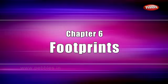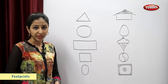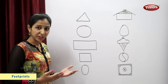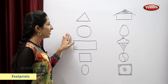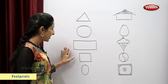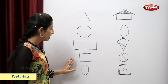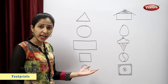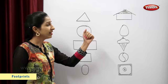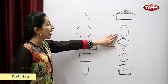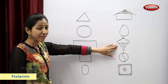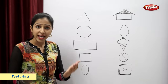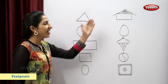Chapter 6 Footprints. Students, on one side I have drawn shapes: triangle, circle, rectangle, square and oval. On the other side I have drawn figures: hut, egg, ice cream, ball and a carom board. Now help me to match shapes and figures.